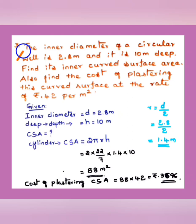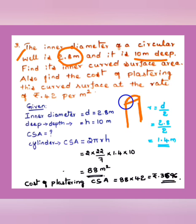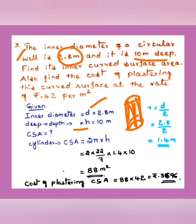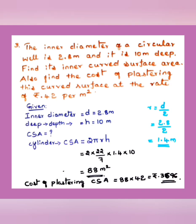Next problem: The inner diameter of a circular well is 2.8 m and it is 10 m deep. You can draw a rough diagram — a well is cylindrical in form. Given: diameter = 2.8 m, depth (height) h = 10 m. Find the inner curved surface area, and also find the cost of plastering this curved surface area at the rate of ₹42 per m².